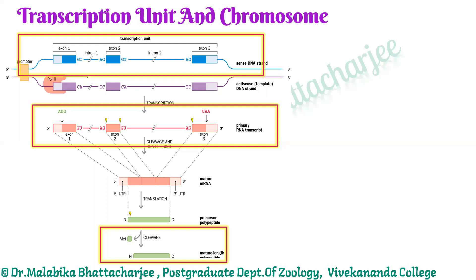The primary RNA transcript then moves forward to give us the mature polypeptide product. That is how from a DNA we get a product in the form of a protein. And those DNAs or genes that give a product as a protein are known as structural genes.